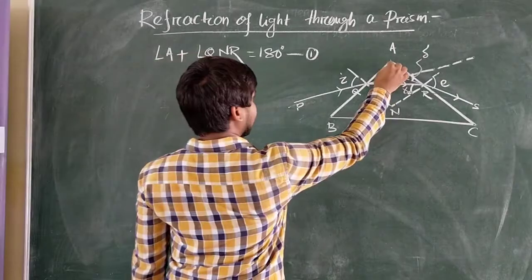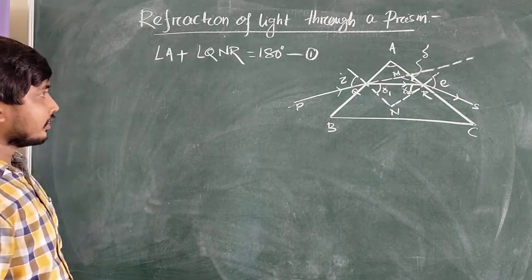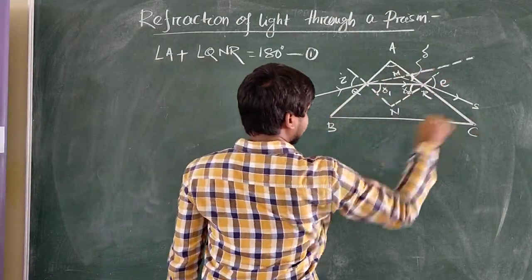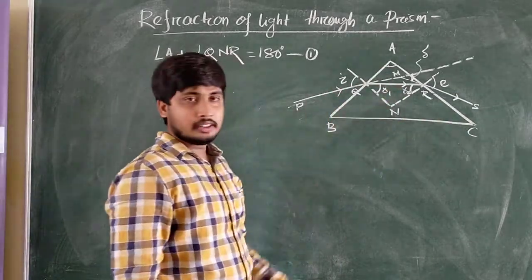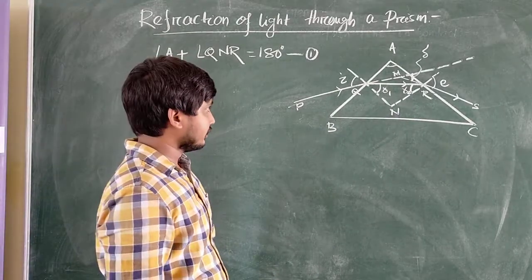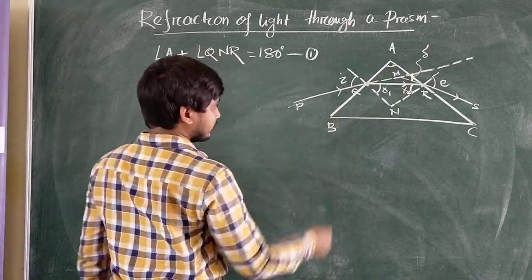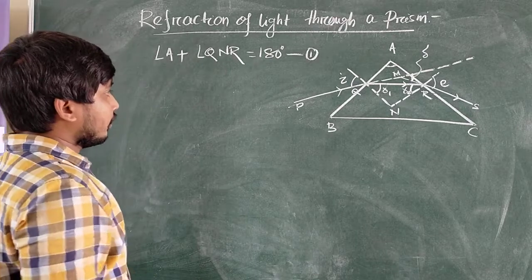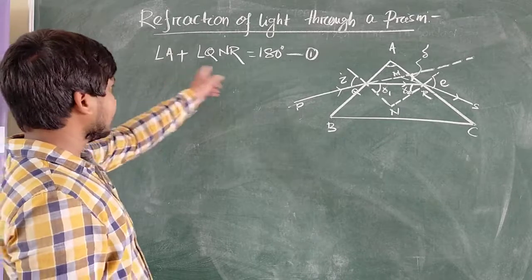This angle A is known as the angle of the prism. The angle of the prism is defined as the angle made by the two refractive surfaces. In this prism, AB and AC are the refractive surfaces. So the angle made by these two refractive surfaces — angle BAC — is the angle of the prism. So A is the angle of the prism here.